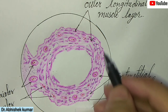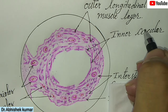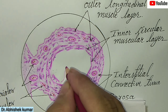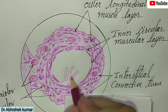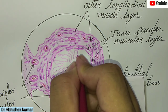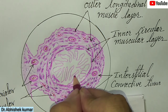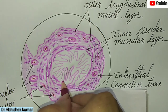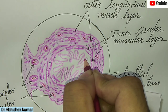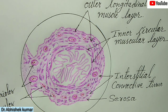Now you can see on your screen that this is the inner circular layer. Note: it is the inner circular layer, not a muscular layer — I had written it incorrectly, please correct it.